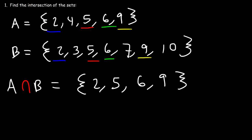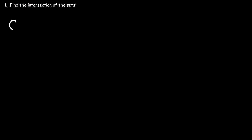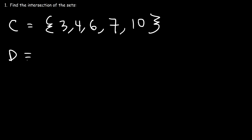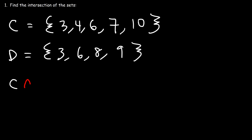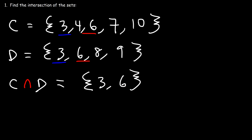Now let's work on some more examples. Let's say this is set C, and it contains the elements 3, 4, 6, 7, and 10, and also set D, which contains the elements 3, 6, 8, and 9. Feel free to pause the video and determine the intersection of sets C and D. Which elements are common to both sets? 3 is common to both sets, and 6, and that's it.